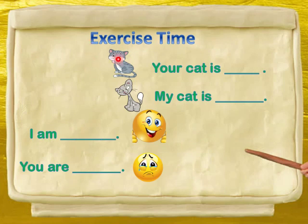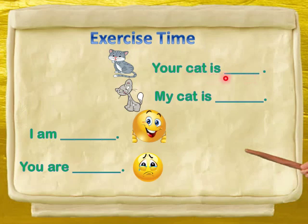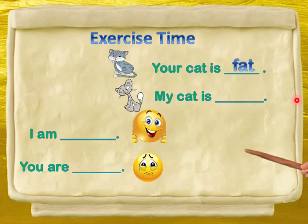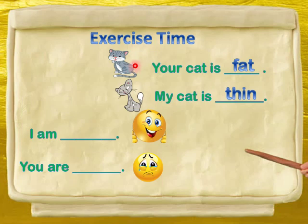Okay children, this is exercise time now. अच्छा बच्चों, मैंने यहाँ पर कुछ sentences लिखे हैं. यहाँ पर कुछ pictures भी हैं और इन pictures को देखकर हमें इन sentences को complete करना है. जो भी word इस sentence में आएगा उसका opposite दूसरे sentence में आएगा. यहाँ this cat is fat — और my cat is thin. Fat का opposite है thin. I am happy. और you are sad — happy का opposite sad.